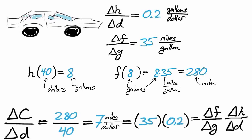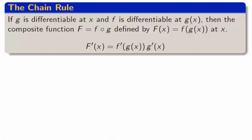Average rates of change multiply, but not only that. The chain rule says that instantaneous rates of change also multiply.